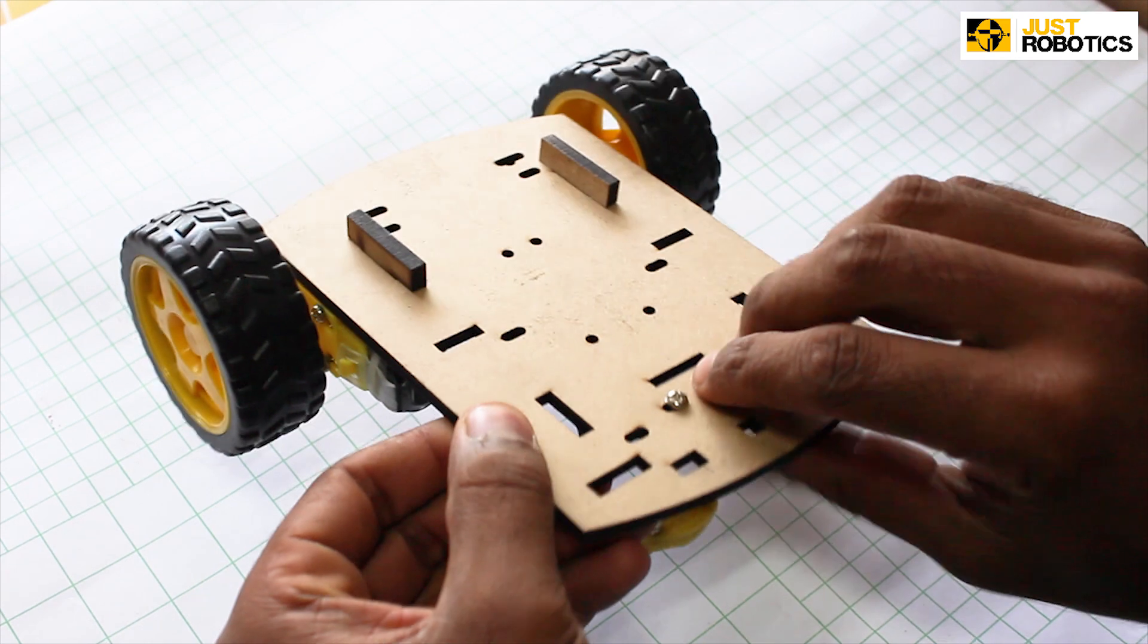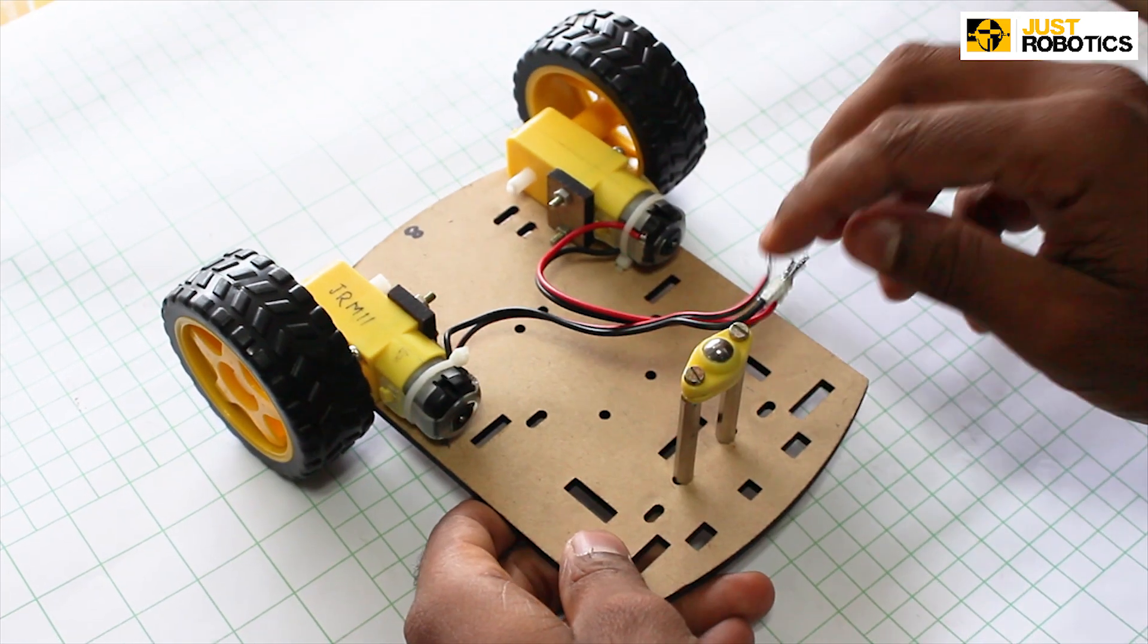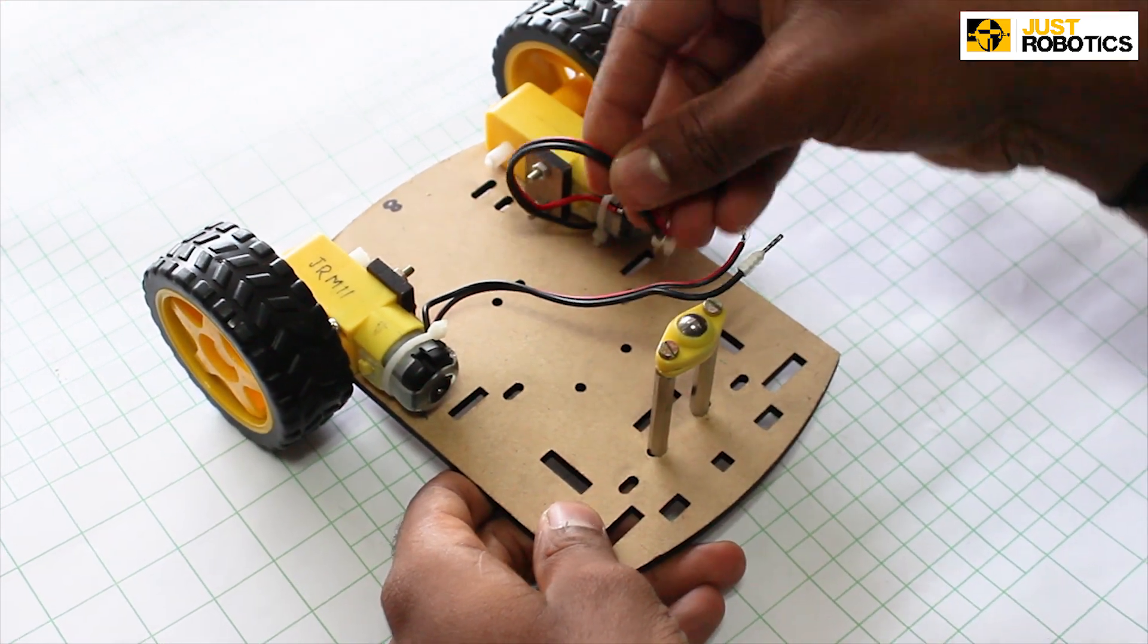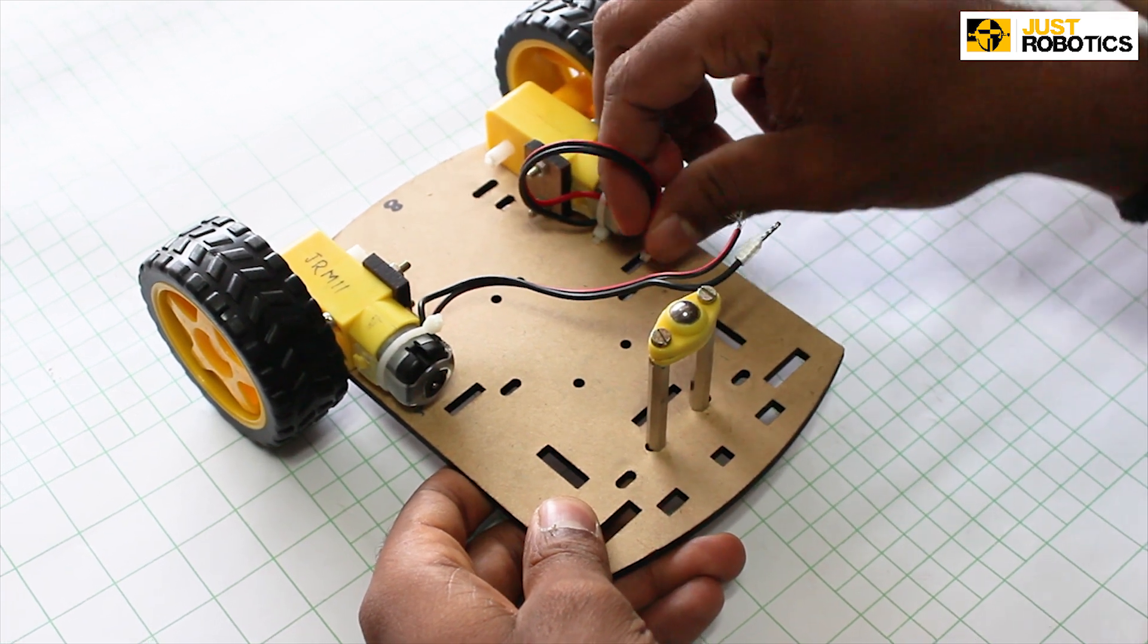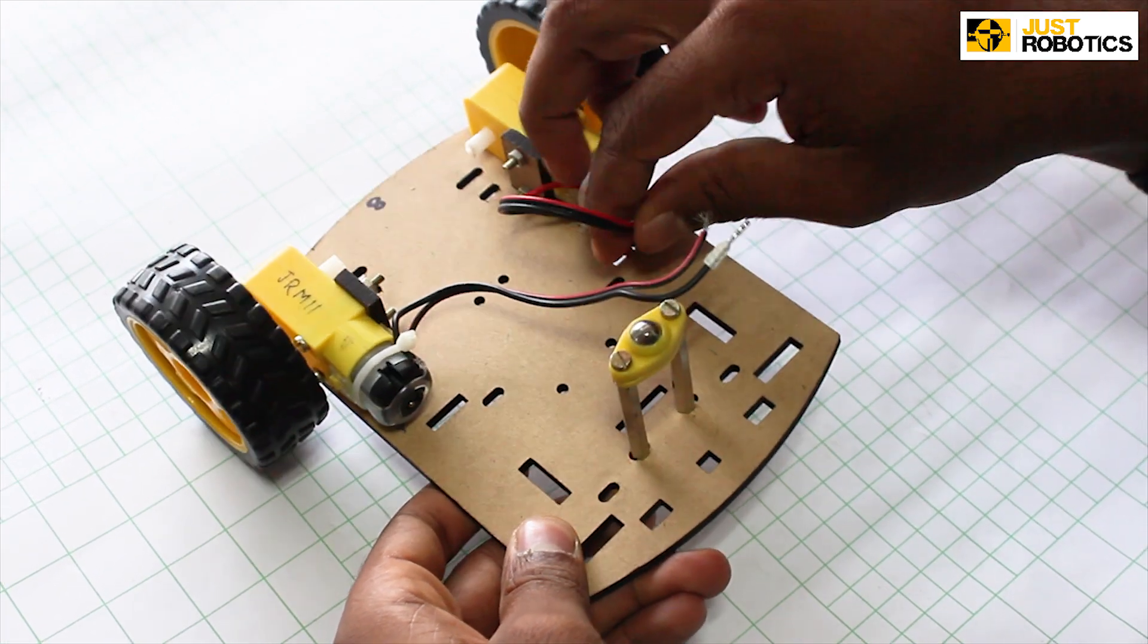Now flip it around and as you can see there are wires coming out of our motor. Now through the slots provided, take the wires out through these slots.